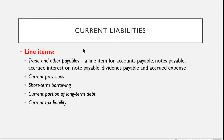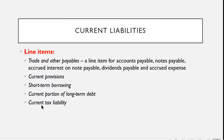What are the items that belong to current liabilities? We have trade and other payables — this is the collective term for accounts payable, notes payable, accrued interest, dividends, and accrued expenses. Then we have current provisions, which include warranties and coupons, where you provide for future warranty claims. And then we have short-term borrowings, current portion of long-term debt, and current tax liability.